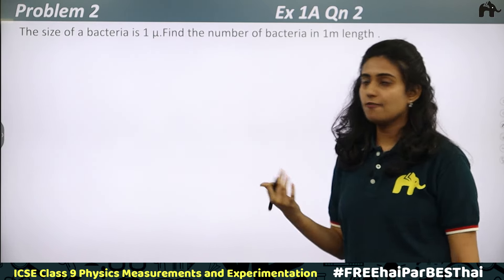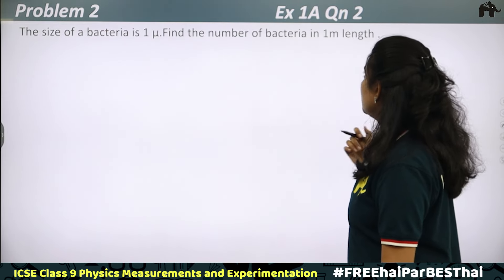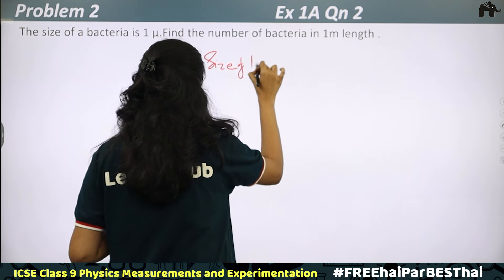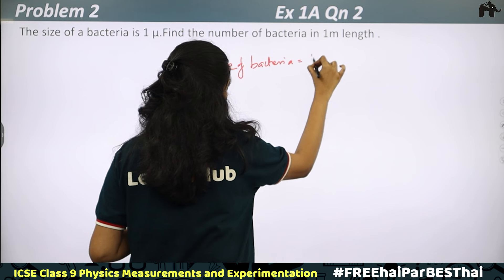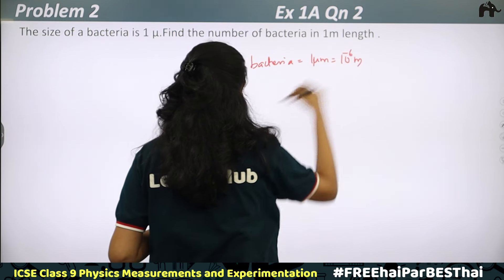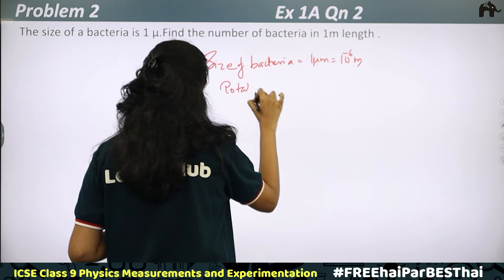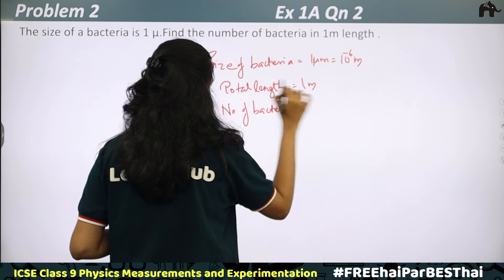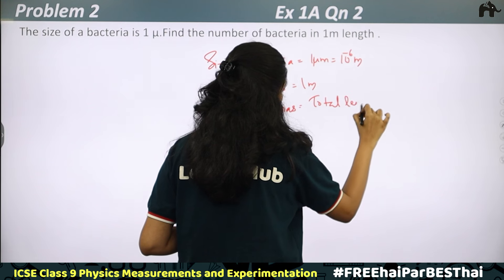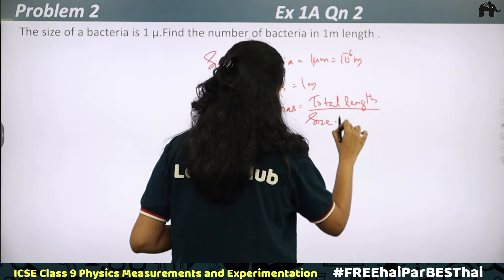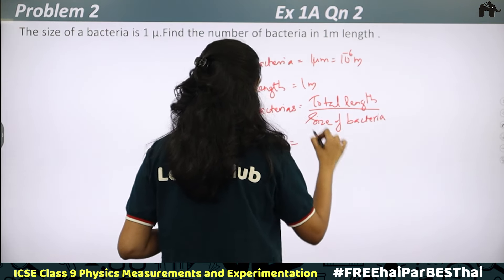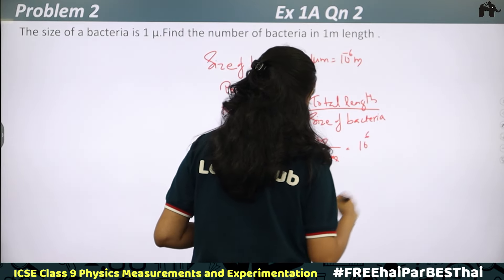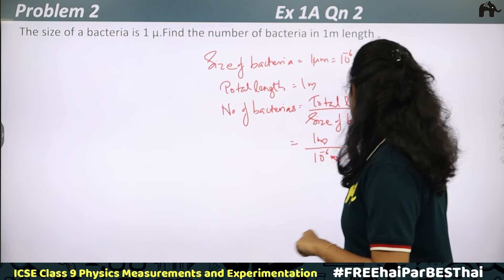Exercise 1A, Question 2: The size of a bacterium is 1 micron (1 μm = 10⁻⁶ m). Find the number of bacteria in 1 meter length. Number of bacteria = total length / size of one bacterium = 1 m / 10⁻⁶ m = 10⁶. So the number of bacteria is 10⁶.